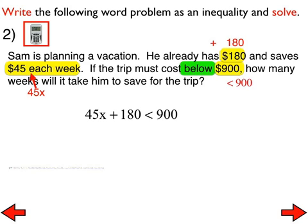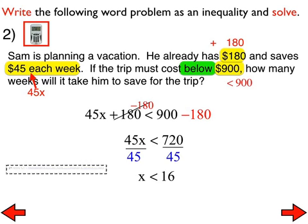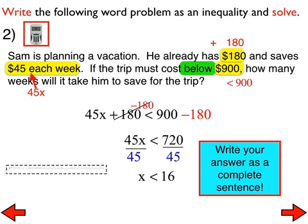Bushra, what did you get for your solution? Well, x is less than 16. All right. We subtract 180 from both sides, divide by 45, and the solution is x is less than 16.